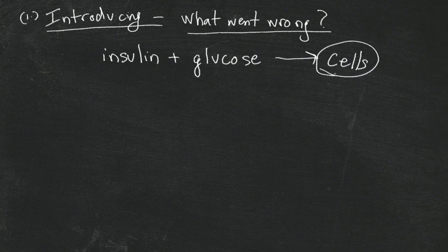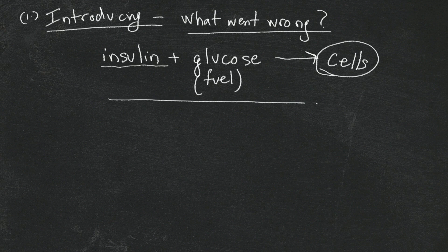If everything's right and you don't have diabetes, insulin is a hormone that is responsible for taking glucose — which is the body's primary source of fuel — and bringing that into the cells. Insulin is really important. It also helps you metabolize protein, and it's responsible for growth as well as carbohydrate metabolism. It's a very, very important hormone.